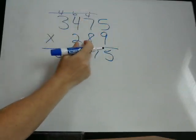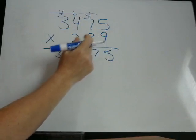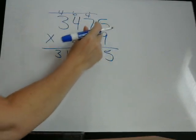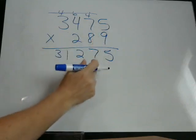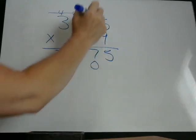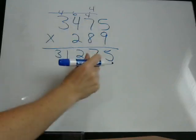Then we move to the left. We have 8. We do the same thing. 8 times 5 is 40. Now remember, put your answer under the 8. So 40, we're writing like this. 40.